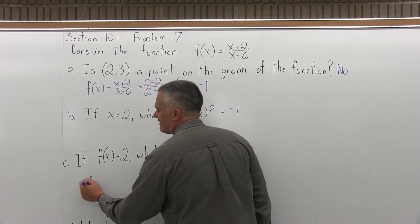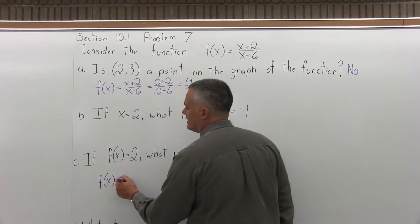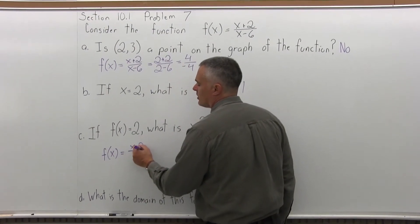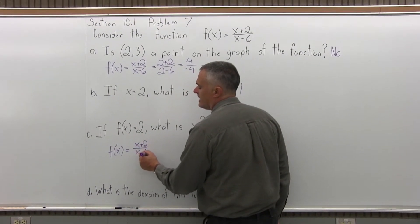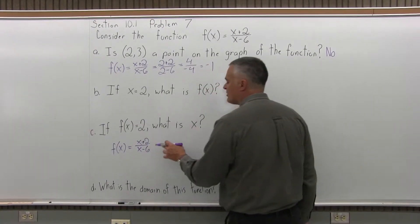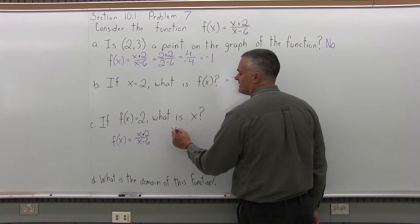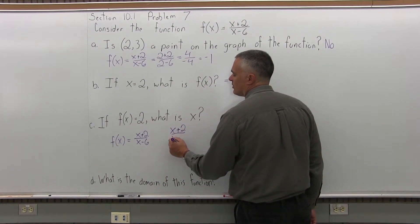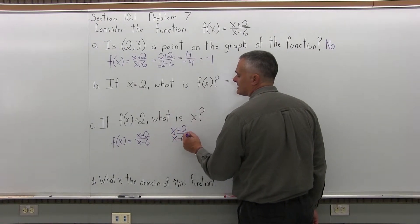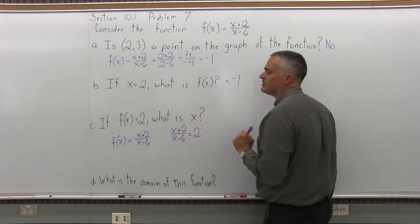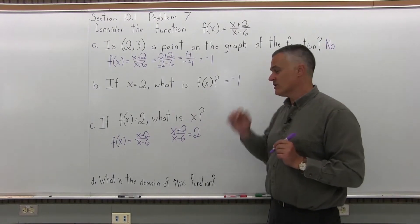So take the function that's given, f(x) equals x plus 2 over x minus 6. And for some value of x, x plus 2 over x minus 6 is going to give you a result of 2. There's a value of x that will make that equation true.